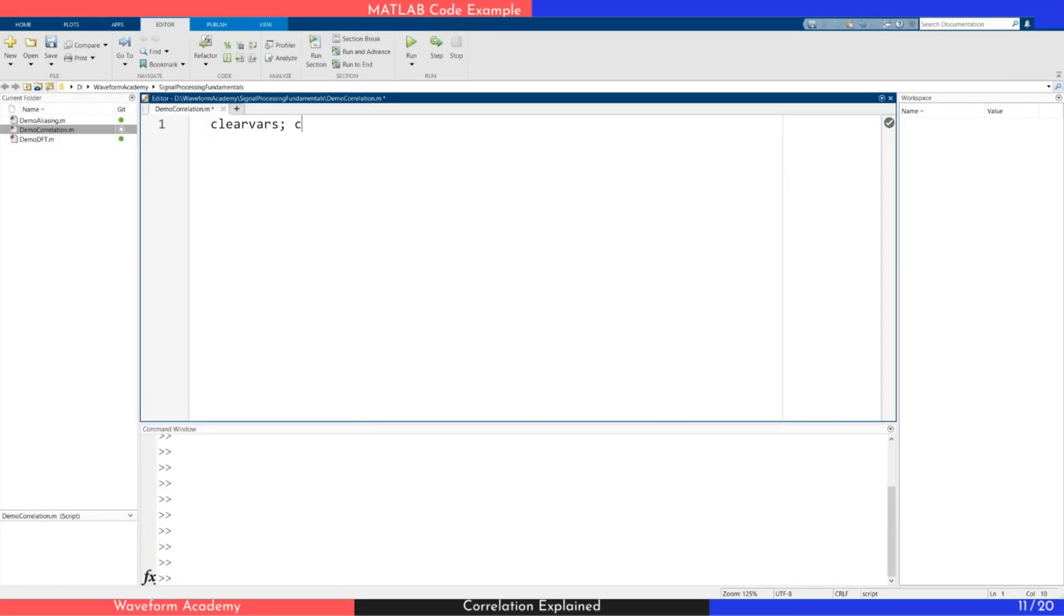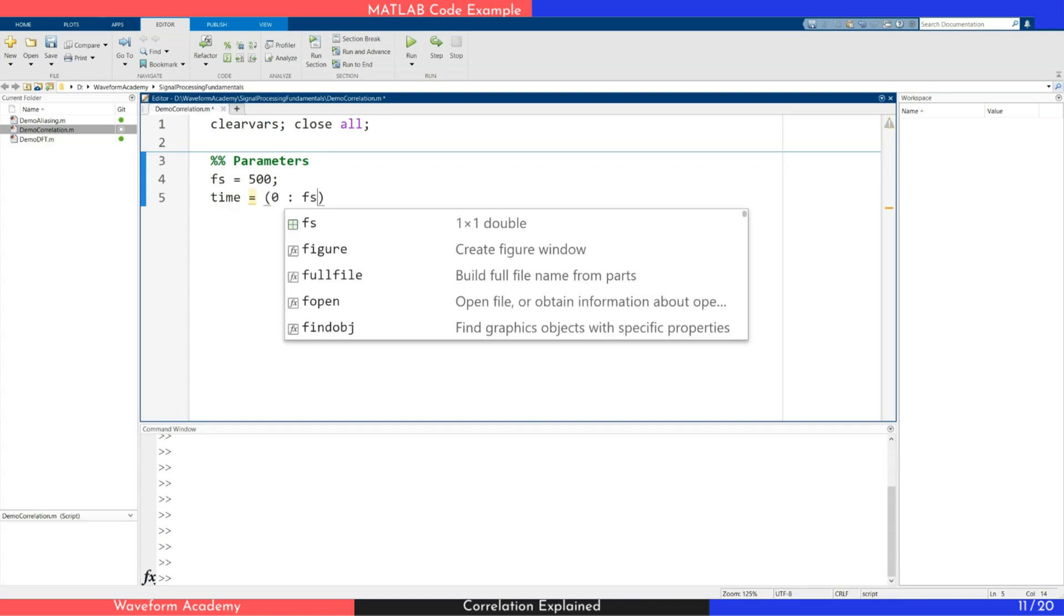We start by clearing the workspace and closing any open figures. In the parameter section, we define the sampling frequency in hertz and create a time vector covering one second.